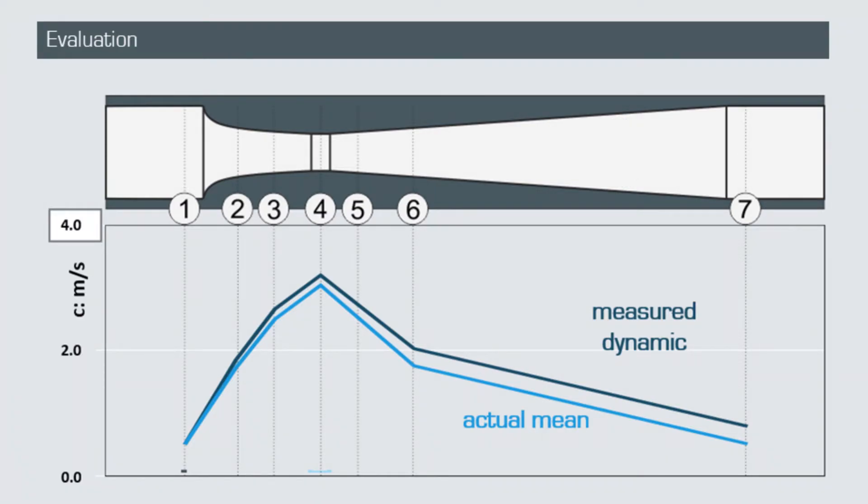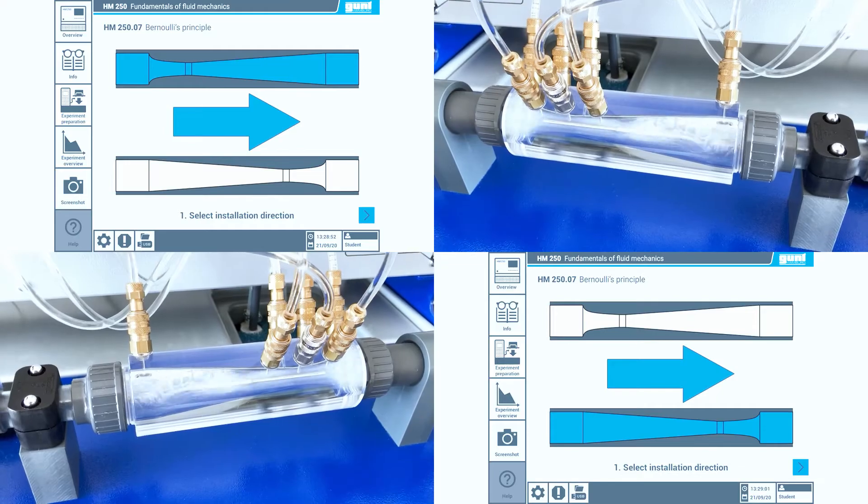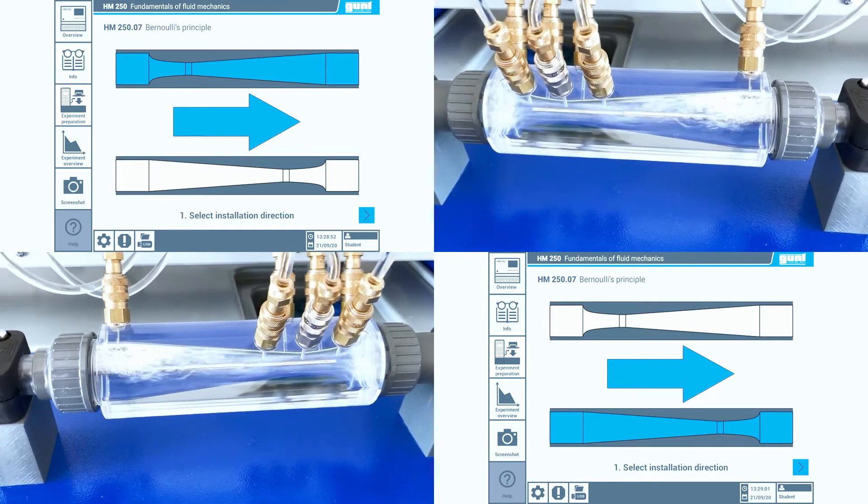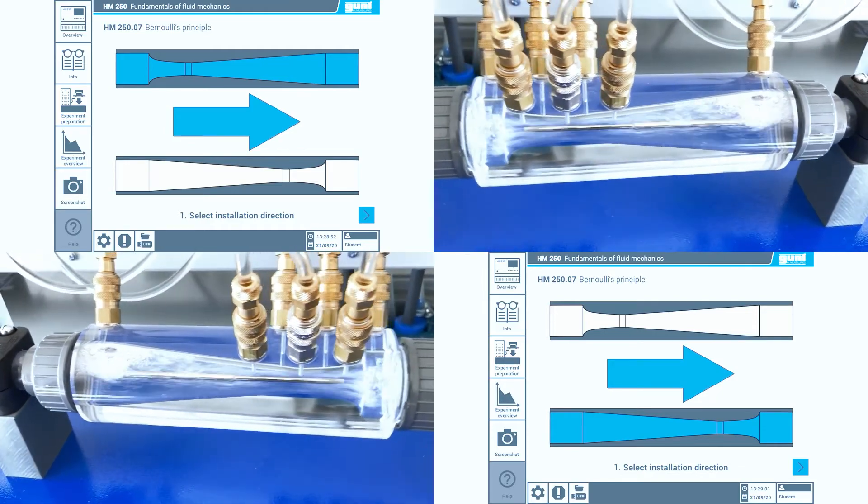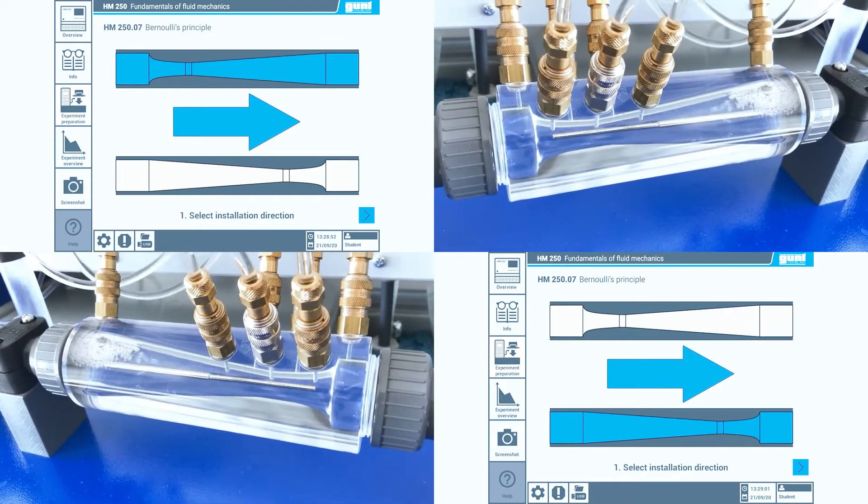And by the way, Gunt has a very nice experiment investigating flow profiles within the fluid line series. As a side note, the Bernoulli experiment from Gunt is the only unit on the market where you can actually reverse the direction of the Venturi nozzle to conduct a whole series of further investigations into Bernoulli's principle.